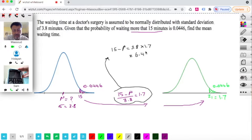So that gives you 6.46. 6.46, which is 15 minus mu. So mu would be 15 minus 6.46. And that gives you 8.54. So mu is 8.54.